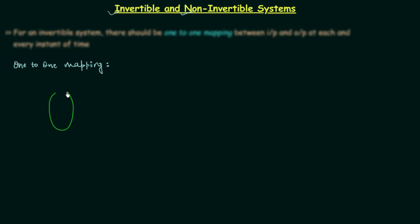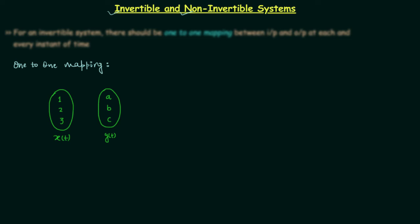In this example, this is the set of all possible values of input. Input is x(t) and let's say there are three elements in this set: 1, 2, and 3. Now I will draw the set of all possible values of output. The output is y(t) and let's say the elements are a, b, and c. In case of one-to-one mapping, all three values of input will produce three distinct values of output.